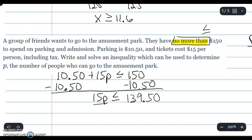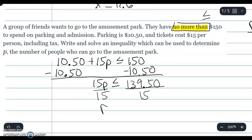And then just divide by 15. p is less than or equal to 9.3. Do you have 9.3 people? Of course not. But you can't have 10, you can only buy nine tickets.